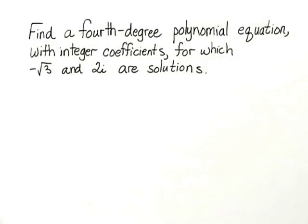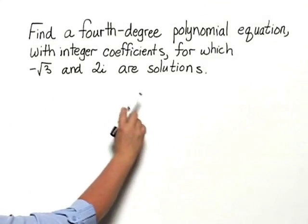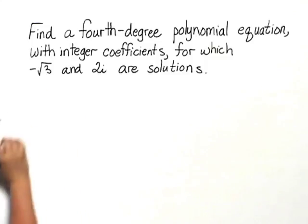Find a fourth degree polynomial equation with integer coefficients for which negative square root of 3 and 2i are solutions.